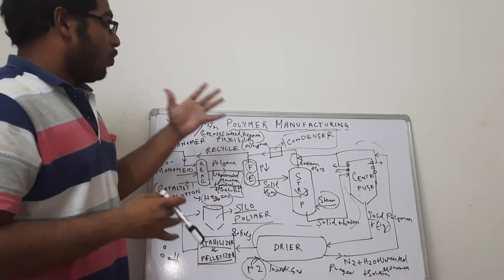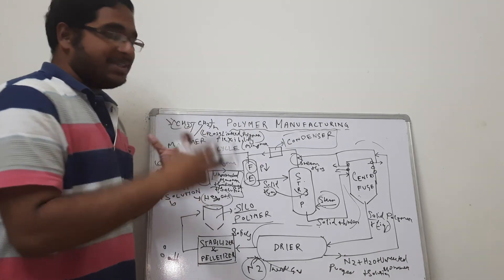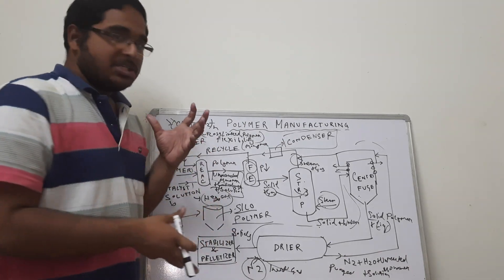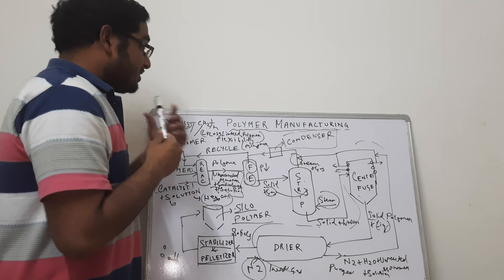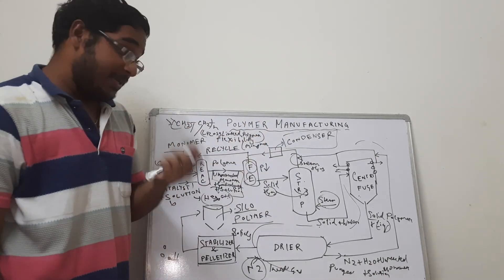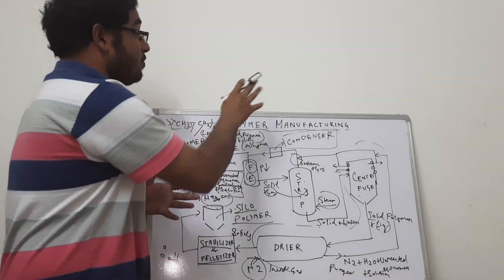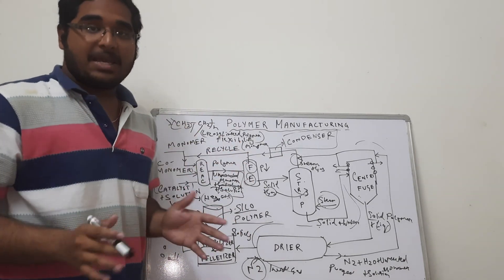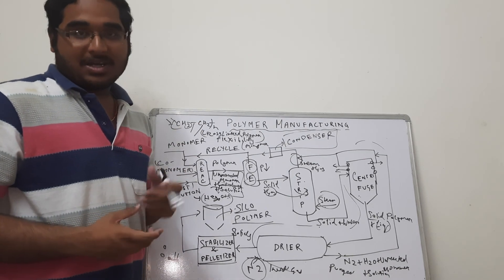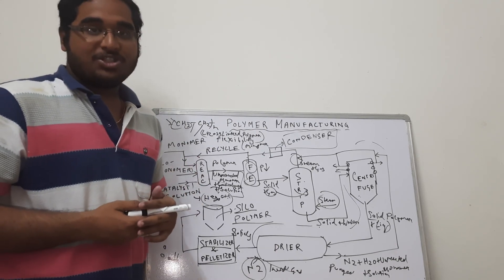Different types of polymers follow different methods — some use bulk polymerization, some use solution polymerization; somewhere steam stripping may not be present, somewhere an extra drying step may be present. But the overall structure of polymer manufacturing remains the same. I hope you have understood. If you have, please share our content, subscribe to our channel, and share it with your friends. Thank you very much.